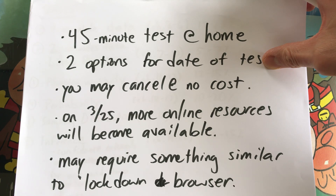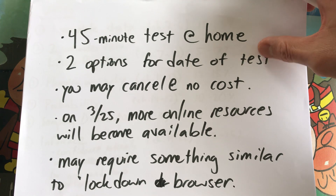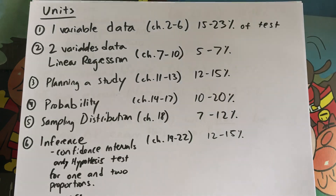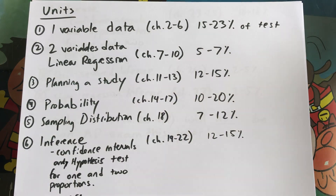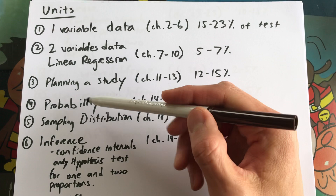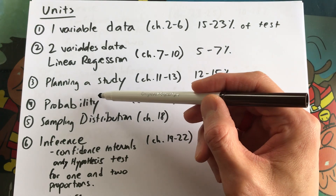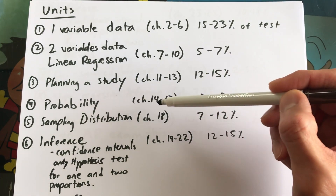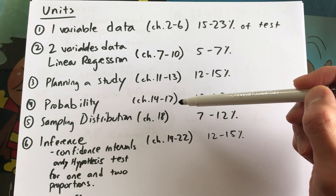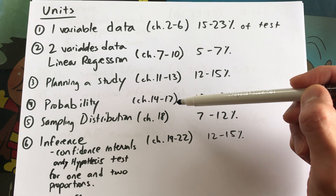That would actually make for a great hypothesis test — is the true proportion equal to 0.91, or is it greater than or less than that?